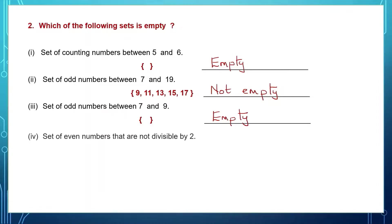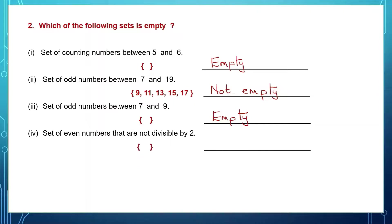Next question: set of even numbers that are not divisible by 2. Let's look at some even numbers: 2, 4, 6 — I can write more. Now look at these even numbers. Is there any number here that is not divisible by 2? No. All even numbers are divisible by 2. So that set is empty — the set of even numbers not divisible by 2 is empty.